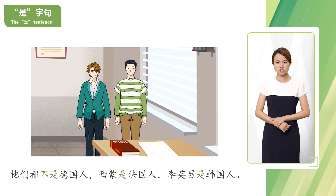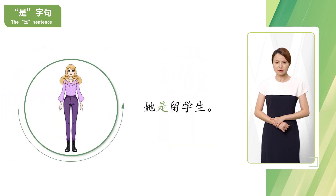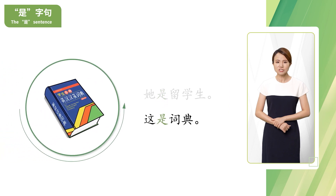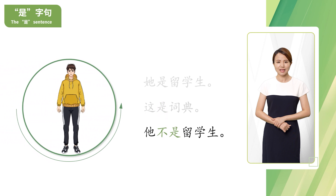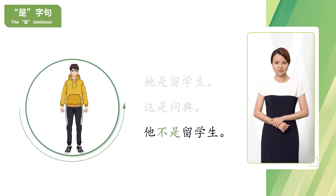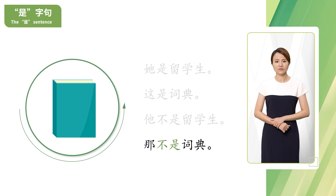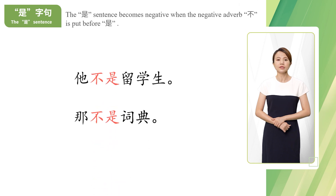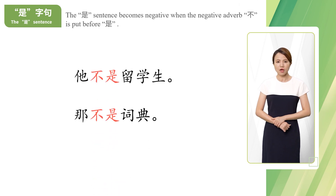Next, let's learn the 是 sentence. Let's look at some pictures and say them together. 他是留学生。这是词典。他不是留学生。那不是词典。A sentence in which the predicate is 是 is known as the 是 sentence. The object after the verb 是 is used to explain the subject. The 是 sentence becomes negative when the negative adverb 不 is put before 是.